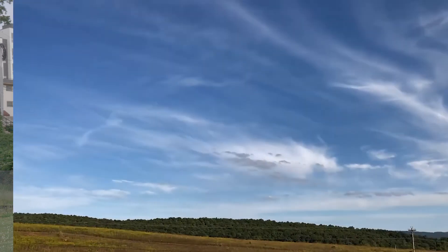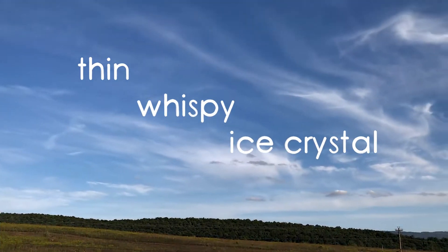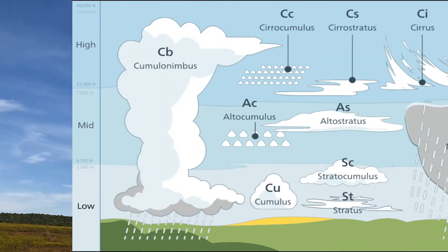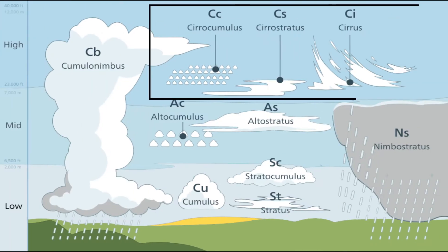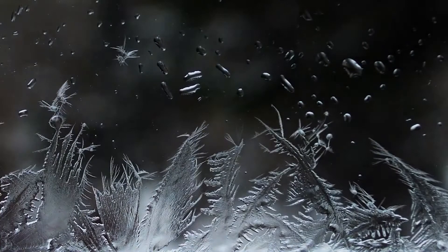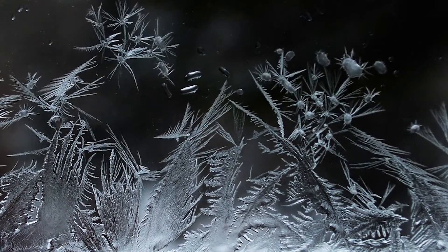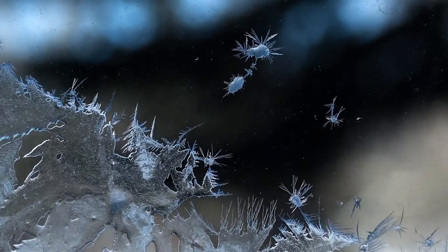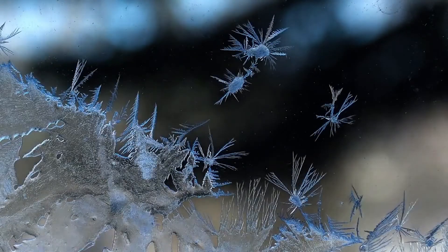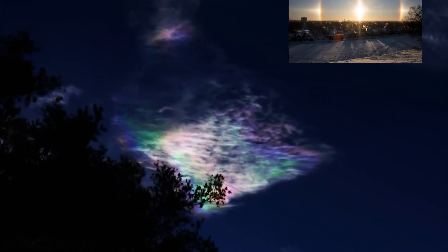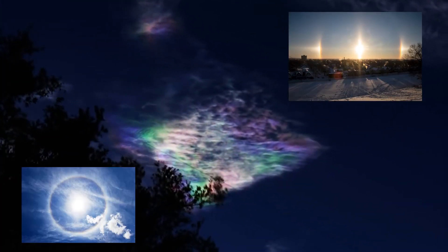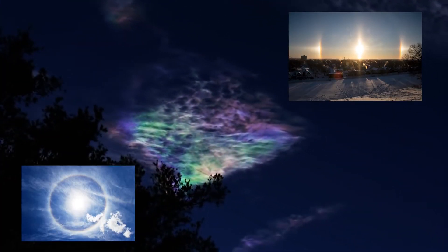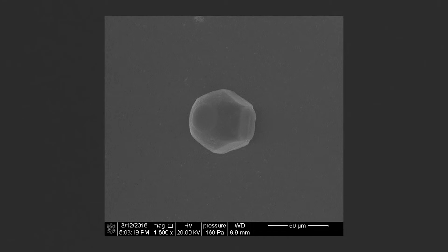Cirrus clouds are thin, wispy, beautiful ice crystal clouds that occur between 15,000 and 45,000 feet. They form via deposition, which is when water vapor deposits onto particles and instantly freezes, skipping the liquid phase. They are known for their beautiful optical phenomena like halos around the sun, iridescence, and sundogs — all formed by the ice crystals.